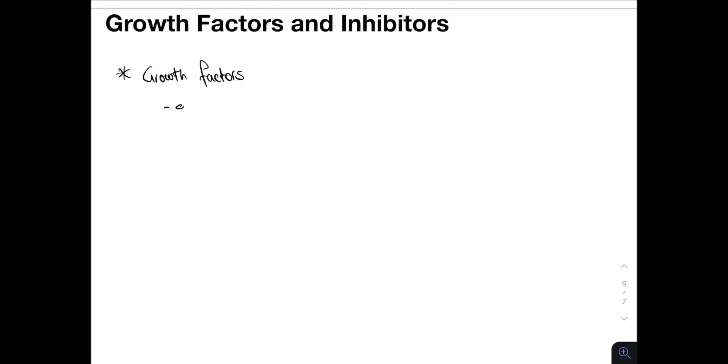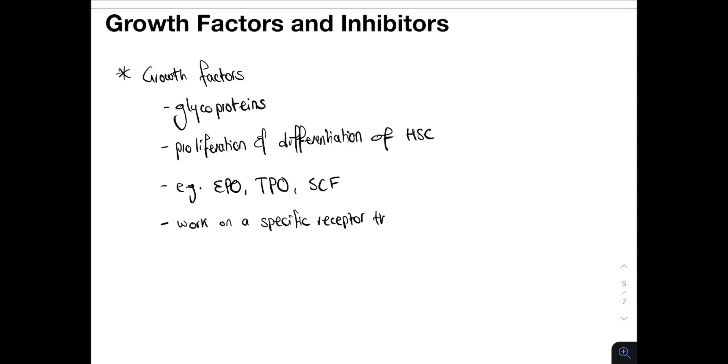The hematopoietic growth factors are glycoproteins. These regulate the differentiation and proliferation of the hematopoietic progenitor cells. Examples of these include erythropoietin and thrombopoietin. They all work via a specific receptor that stimulates a downstream signaling pathway. An example of this pathway is the cytoplasmic JAK pathway. The JAK pathway is very important in hematological cancers. Many drugs have been developed to target this pathway.